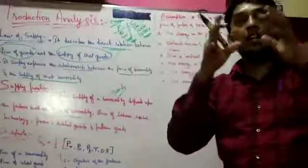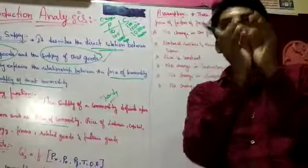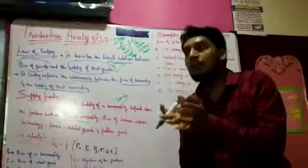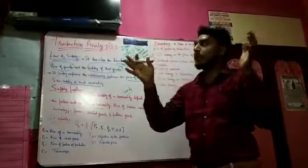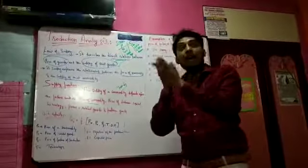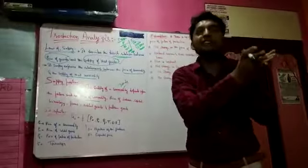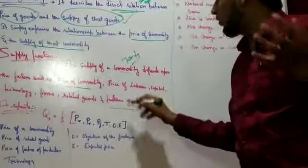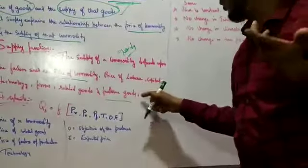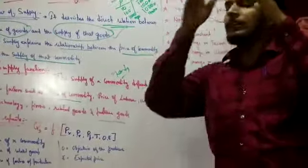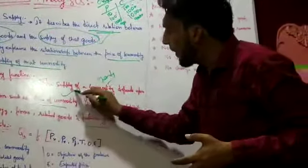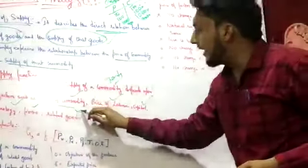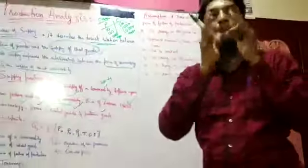The number of firms also increases reputation. Related goods matter — when you are a product factory owner, you should have all other goods also. For example, in a farm business, you should have Apple, Orange, Banana — all those items. If one product doesn't fit a consumer, he will go for a related product. You should also focus on future goods — what next innovation you are going to bring. So supply depends upon all these factors: price of commodity, price of labor, price of capital, state of technology, number of firms, related goods, and future goods.